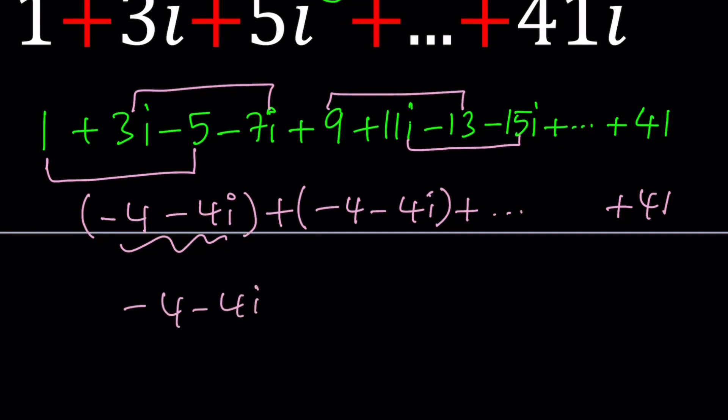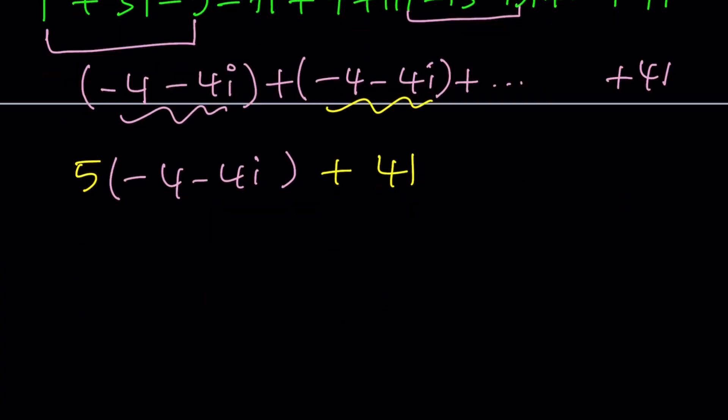One of these will be multiplied by 5 because we're adding the same thing over and over, so this term times 5 is going to give us the sum except for the last term, which is 41. Makes sense? We have 21 terms, and each four consecutive terms gives us this sum. Now let's go ahead and simplify this.